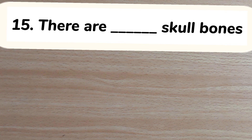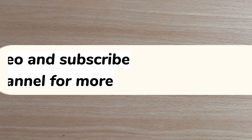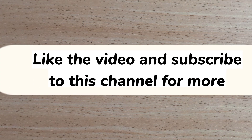Number 15. The adult skull bones total: A. 8, B. 14, C. 22, D. 46. Answer: C. 22. Thank you so much for watching to the end. Please like this video and subscribe to this channel. Thank you.